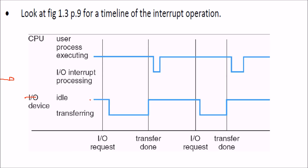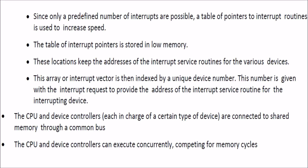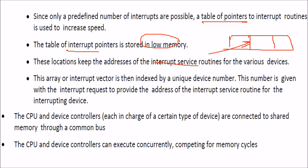When an I/O device needs attention, a transfer occurs, then it returns to idle. Similarly, the CPU does work, becomes idle, does work again. We have a predefined set of interrupts stored in a table of interrupt pointers in low memory. This interrupt vector is indexed by unique device number, giving the address of the interrupt service routine for each interrupting device.